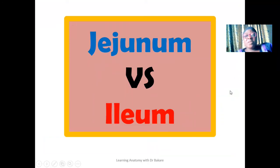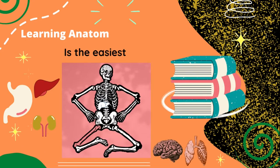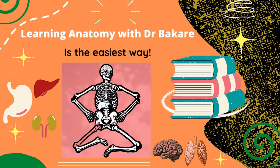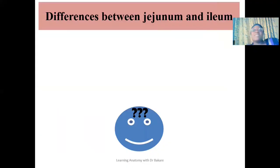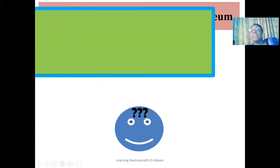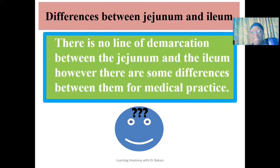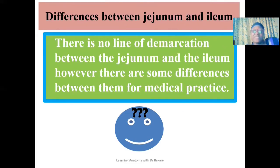Welcome again. Let's look at the jejunum versus the ileum. In this lecture, we'll be unfolding the differences between the jejunum and the ileum. Even though there is no line of demarcation between these two organs, there are some differences recognized for medical practitioners. For anatomists and surgeons, there are distinct characteristics presented by the jejunum and the ileum that can be used to differentiate these two organs.